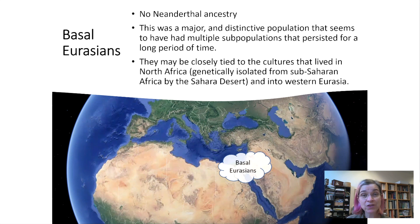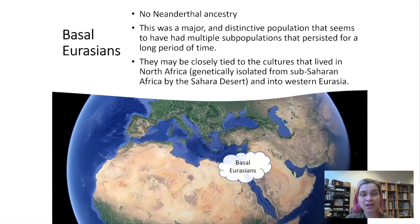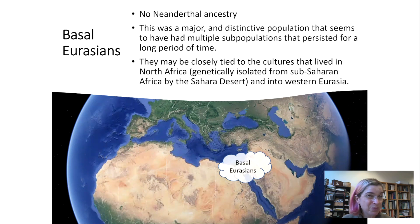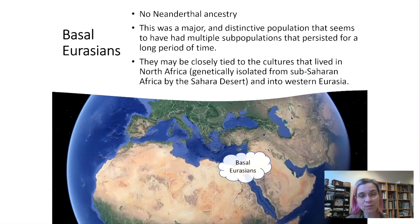We don't know exactly who these people were because researchers have not yet been able to extract DNA from an old enough skeleton representing the Basal Eurasians at that time. Based on genetic sequence data, we think they may be closely tied to cultures that lived in North Africa. They would have been genetically isolated from sub-Saharan Africa by the Sahara desert, and then spread into western Eurasia. They are essentially a ghost population — we know they existed because they left traces in more recent genomes, but we don't have direct evidence of who they were.